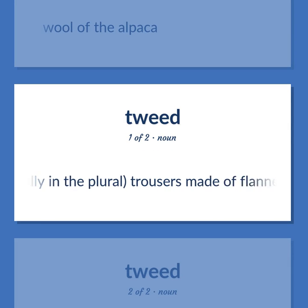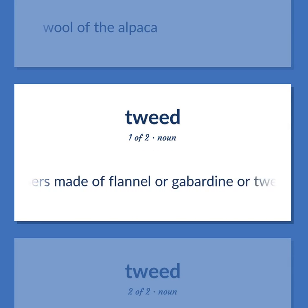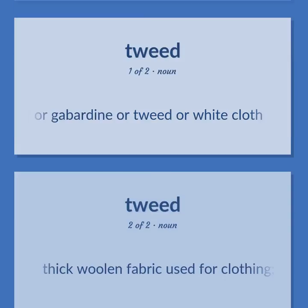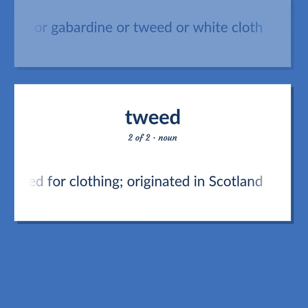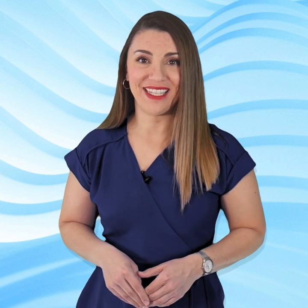Usually in the plural: trousers made of flannel or gabardine or tweed or white cloth. Tweed: thick woolen fabric used for clothing, originated in Scotland. Become our student and get access to effective and free educational materials. Subscribe to our YouTube channel to become a part of our growing YouTube community, and to learn English effectively.